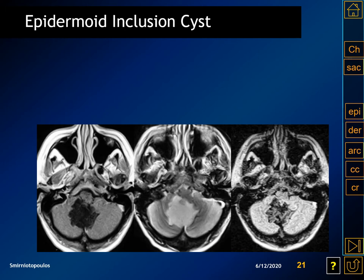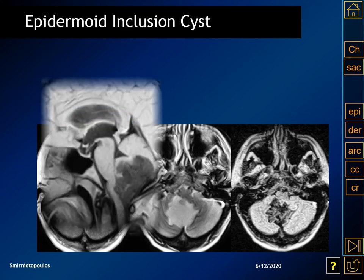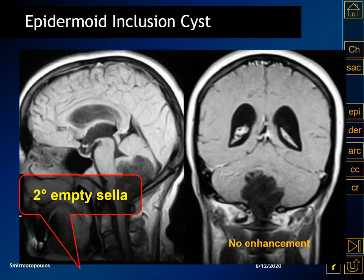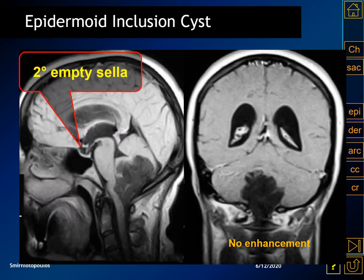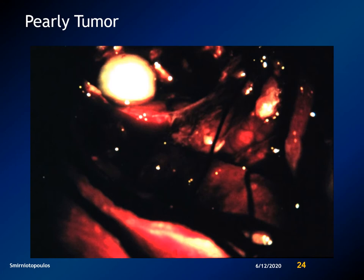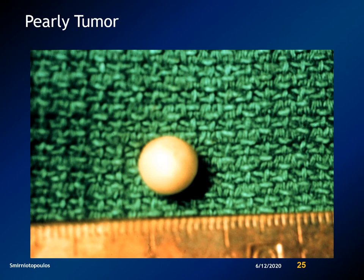This is a fairly typical posterior fossa epidermoid inclusion cyst. Notice that the cyst is relatively water-like, but it differs from the signal intensity of water on the FLAIR image. Also on the FLAIR, note that there are some internal wispy structures representing the layers of keratin within the cystic component. On the sagittal images, the cyst has some internal structure — it's not identical to CSF, merely similar to CSF — and there is no contrast enhancement. Epidermoids are called pearly tumors. At the base of the brain, you can see this material with a very shiny mother-of-pearl appearance, and sometimes you can find a keratin pearl within the cyst.